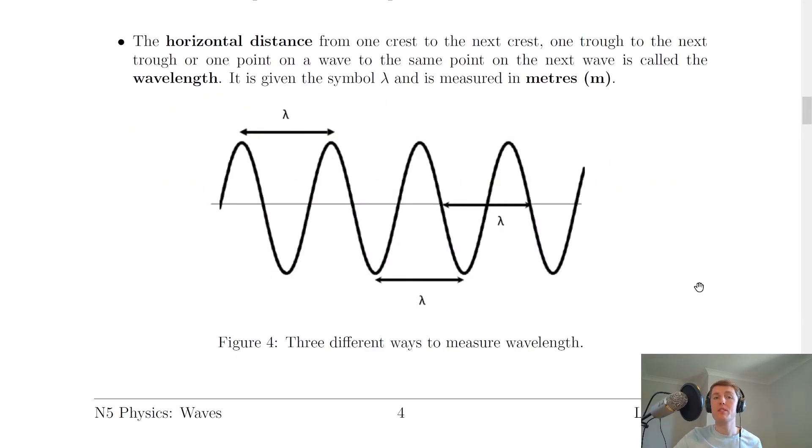So the last property we'll look at is called the wavelength of the wave, and this can be described in several ways. So the first one is that the horizontal distance from one crest to the next crest is called the wavelength. So if we look at this picture, remember the crest is the top point of the wave. So if we go from one crest to the next crest, then that is one wavelength.